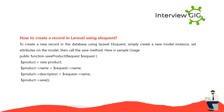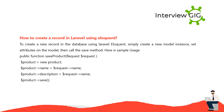How to create a record in Laravel using Eloquent? To create a new record in the database using Laravel Eloquent, simply create a new model instance, set attributes on the model, then call the save method. Sample usage: public function saveProduct(Request $request) { $product = new Product; $product->name = $request->name; $product->description = $request->name; $product->save(); }